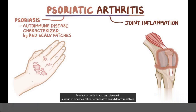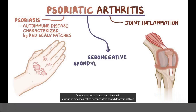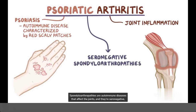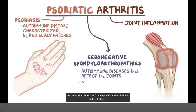Psoriatic arthritis is also one disease in a group of diseases called seronegative spondyloarthropathies. Spondyloarthropathies are autoimmune diseases that affect the joints, and they're seronegative, meaning that there aren't any specific autoantibodies linked to them.